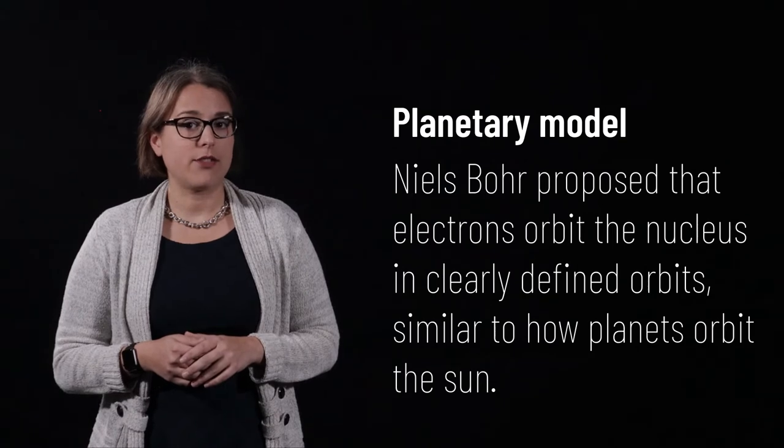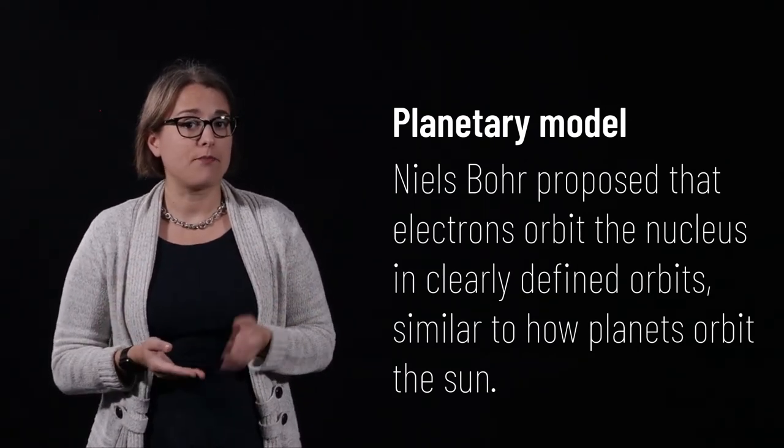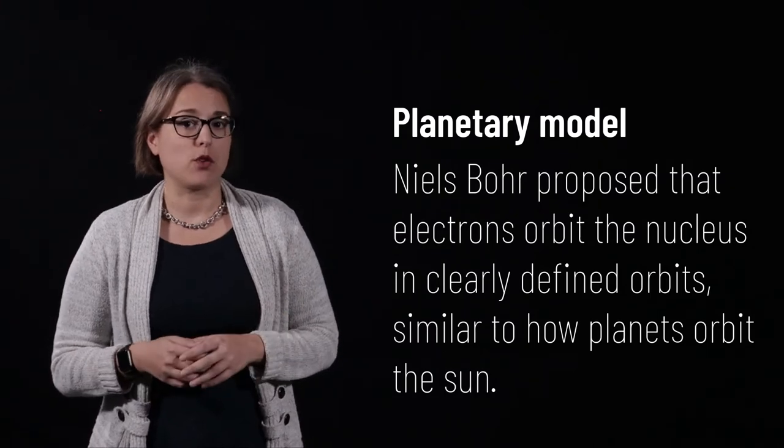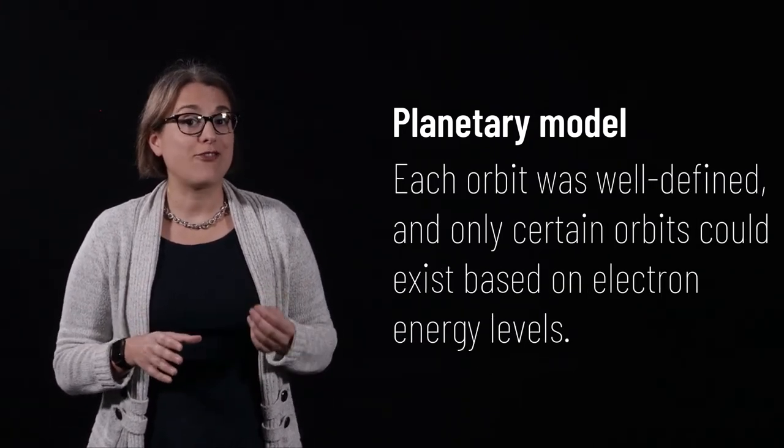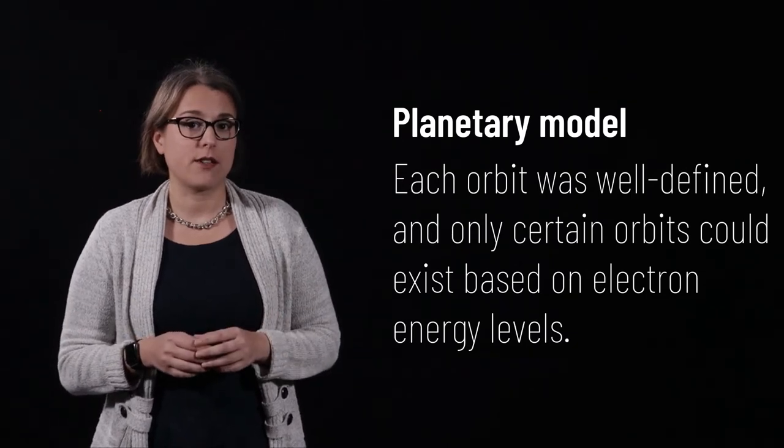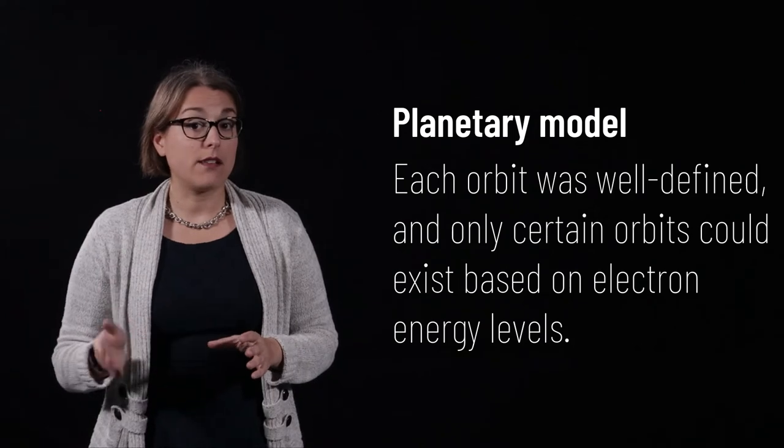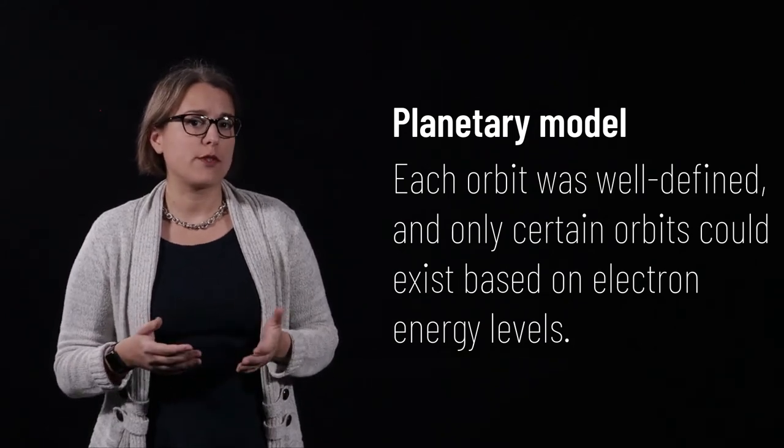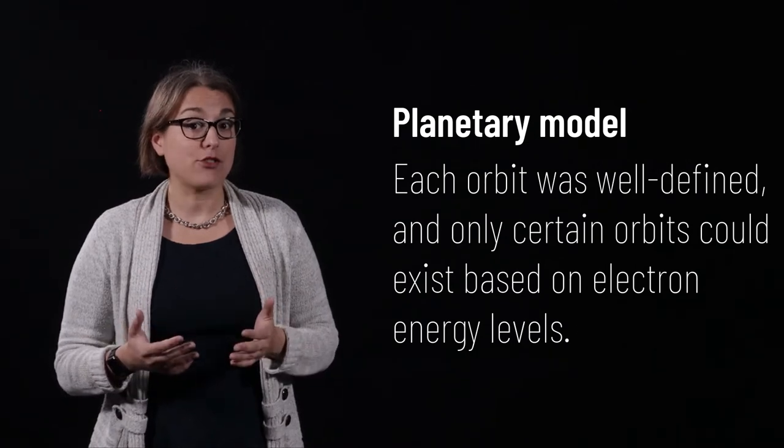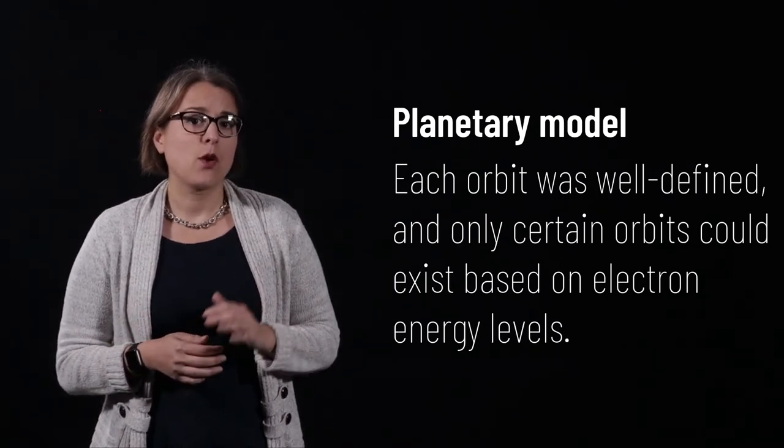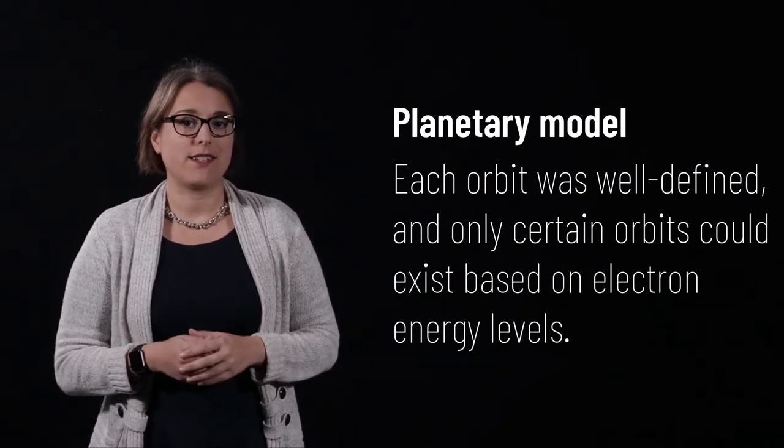Niels Bohr, in 1913, proposed that electrons orbit the nucleus of an atom much in the same way that planets orbit a star. These orbits were well defined, and only a finite number of orbits could exist. In other words, only certain orbits were possible, and an electron could not move around in any arbitrary orbits. These orbits were defined by the amount of energy that electrons contained, which were measured by experiment as existing in very finite, discrete quantities.